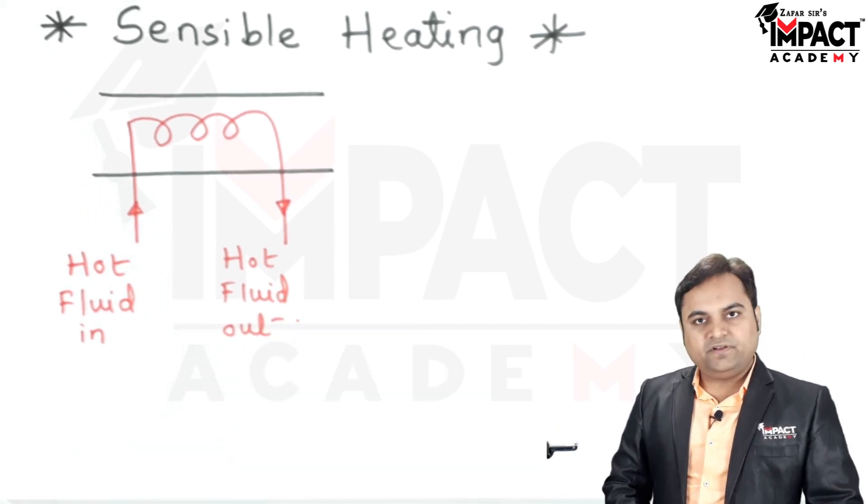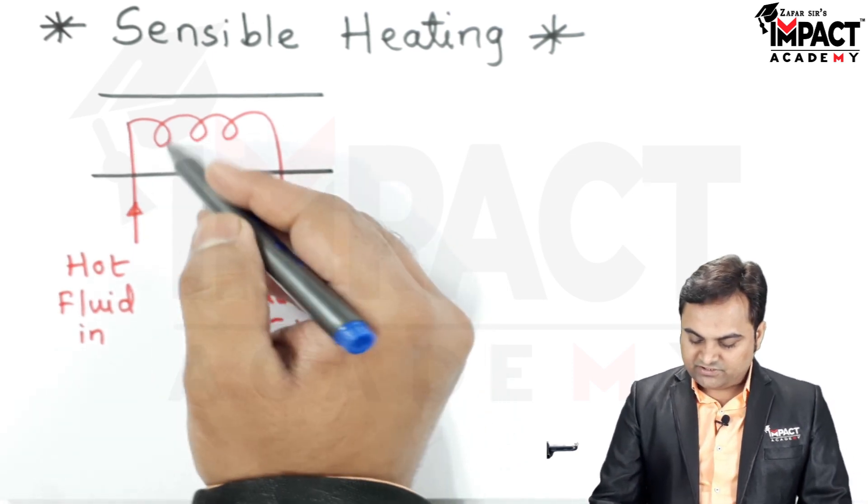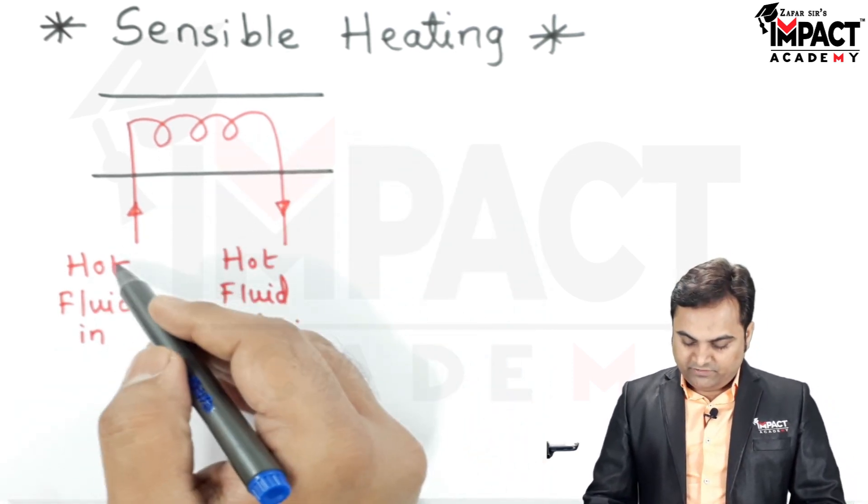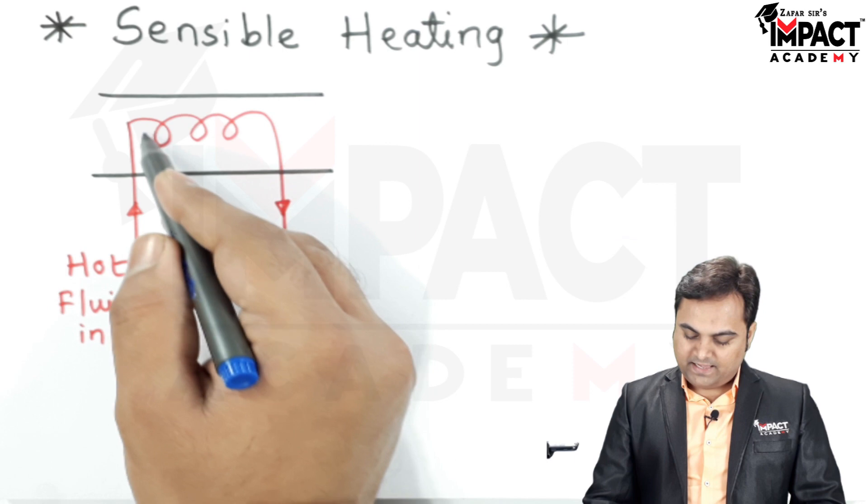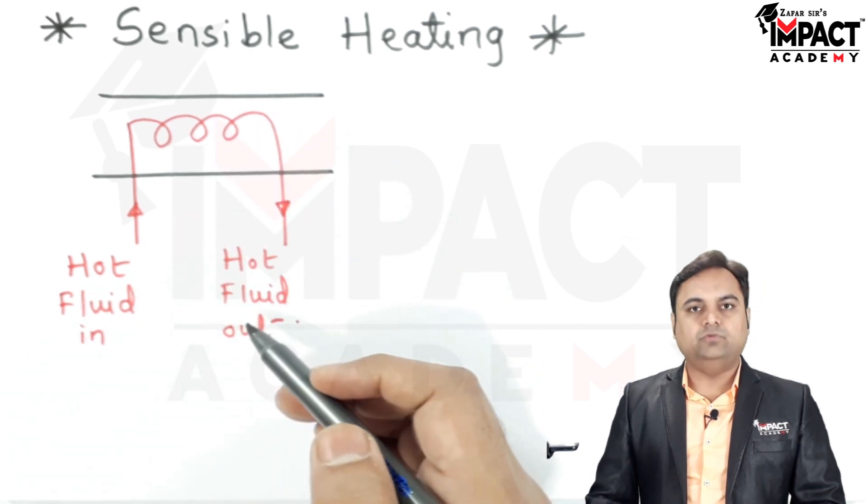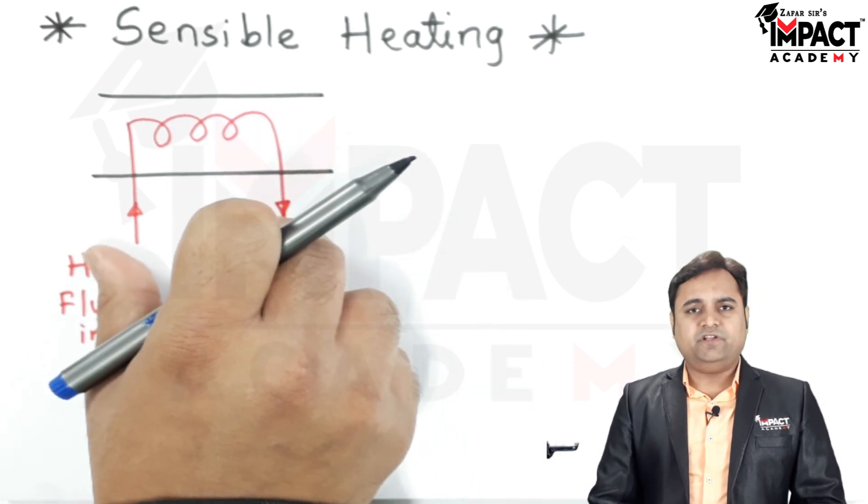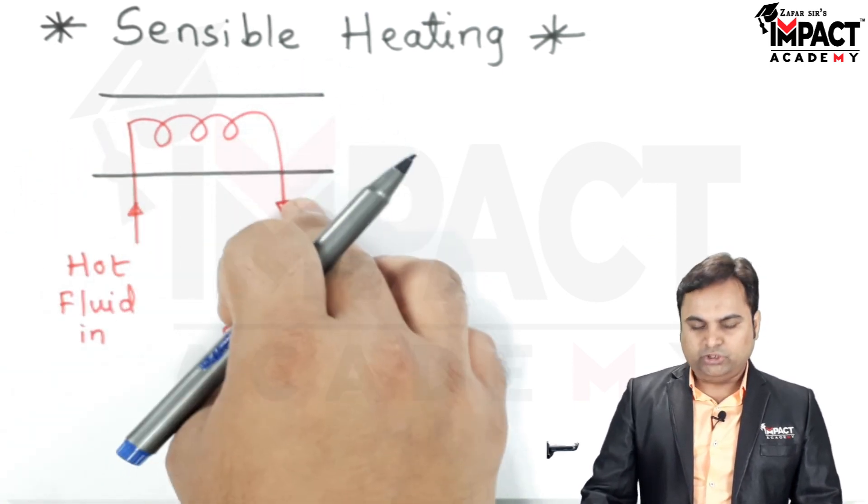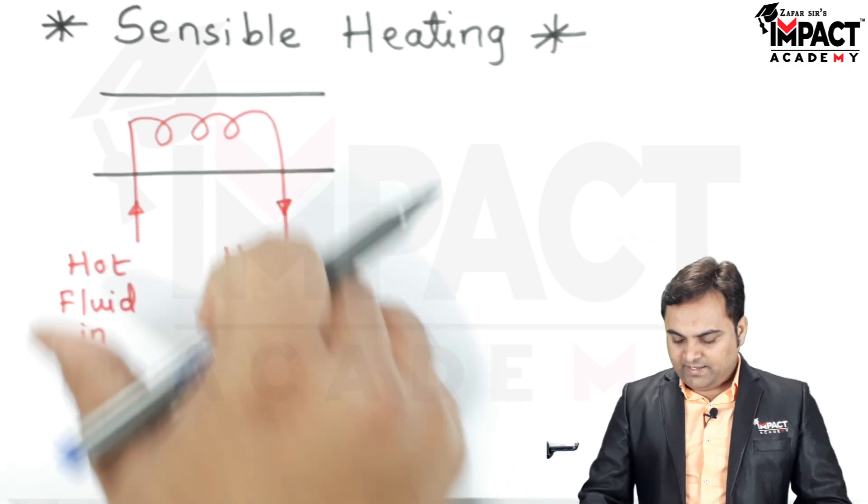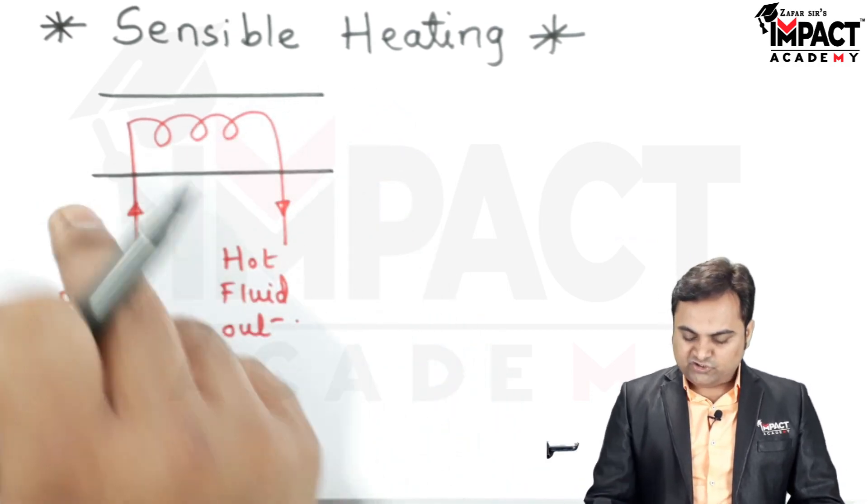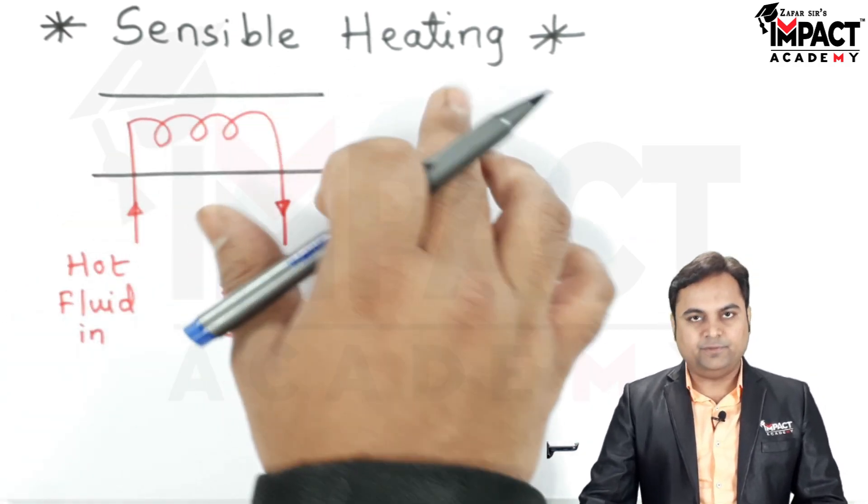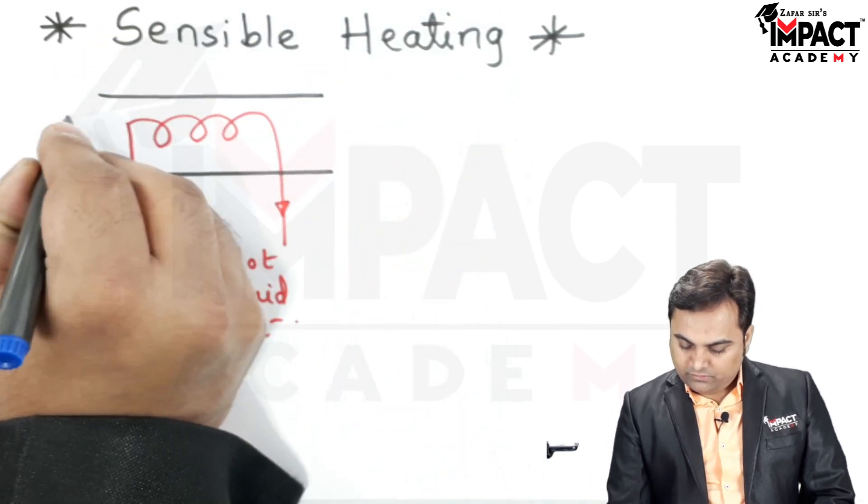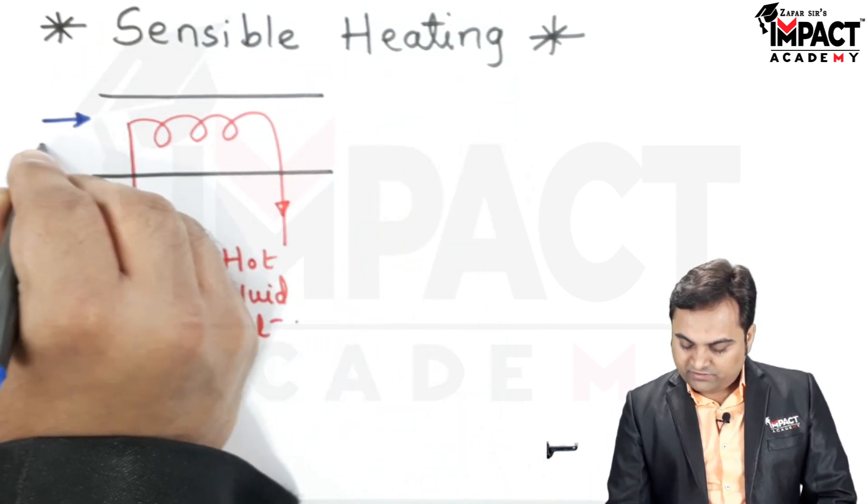Now here there is an example in which there is this heater inside which the hot fluid goes, and then the hot fluid would be coming out. The heating element which we are using here can have steam, for example hot water, or it can simply be an electric heater which is used to heat the air. Since it is sensible heating, the air would be flowing over this heater.